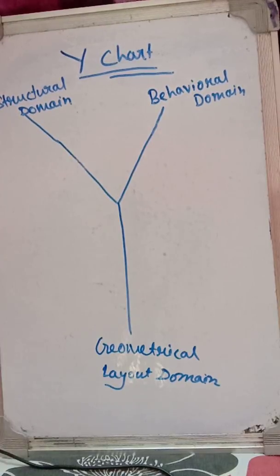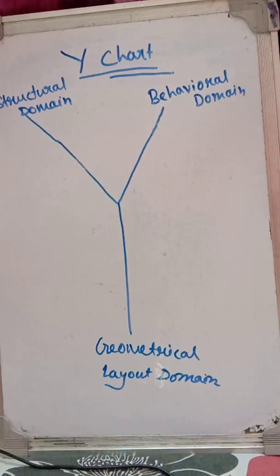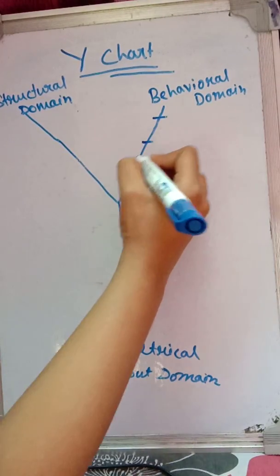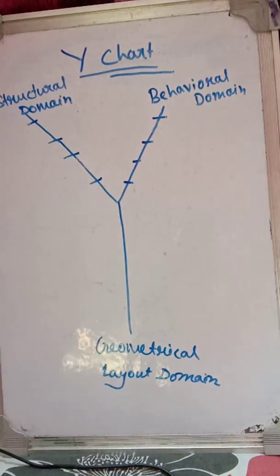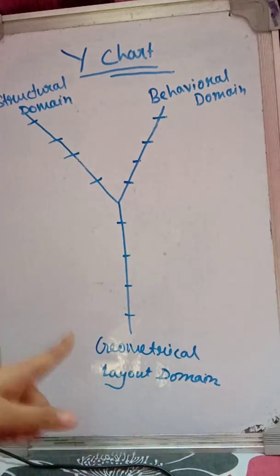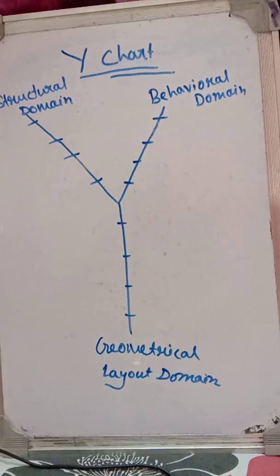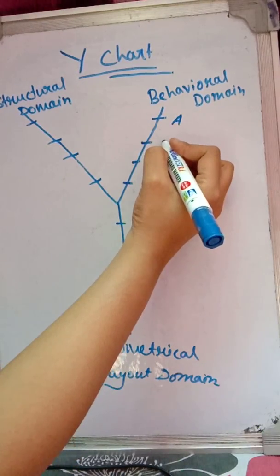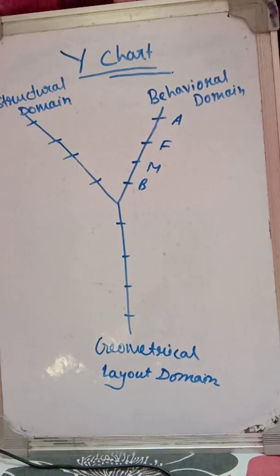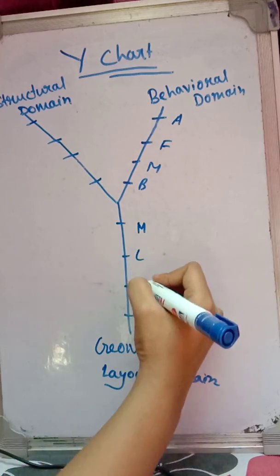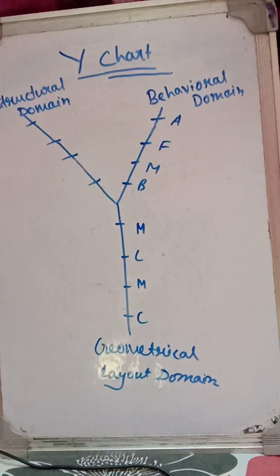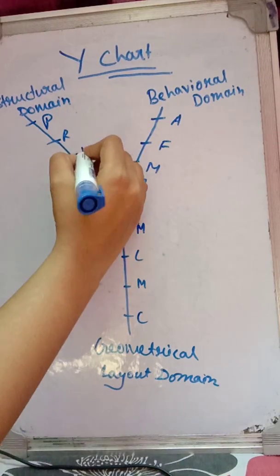Each of the three domains is divided into four levels. We can remember the levels using their initial letters: for behavioral it is A, F, M, B; for structural it is P, R, L, T; and for geometrical layout it is M, C, M, C.